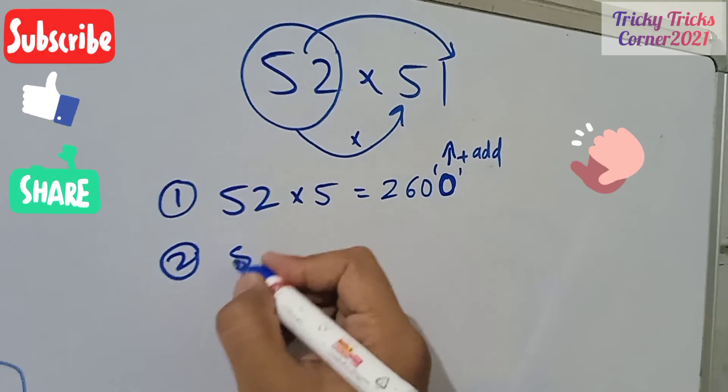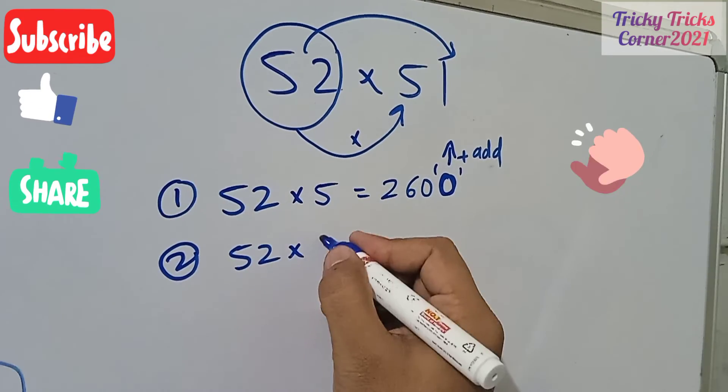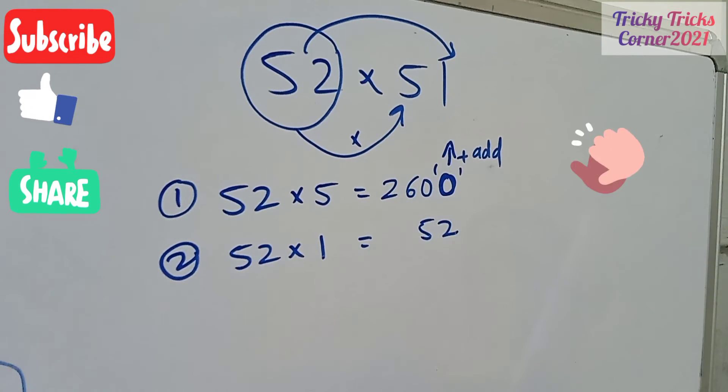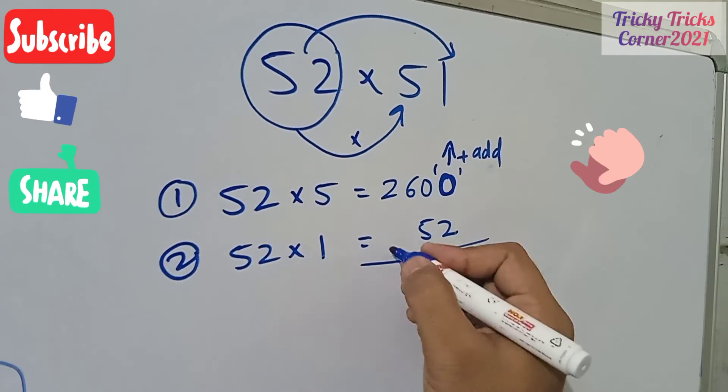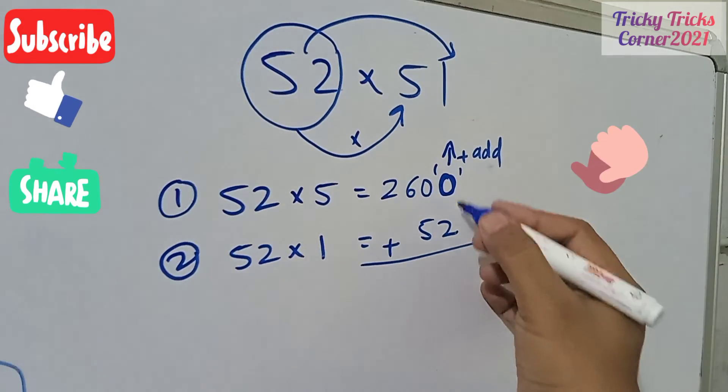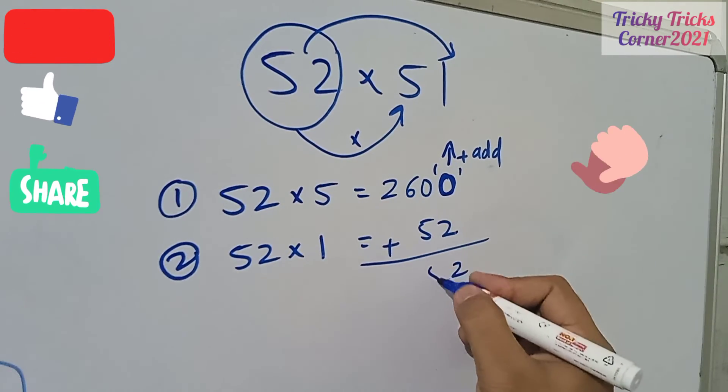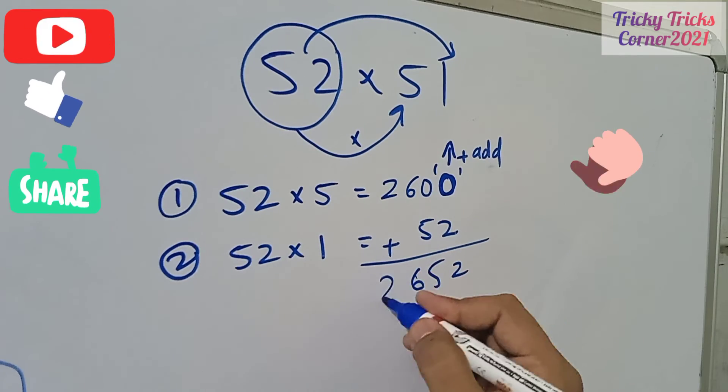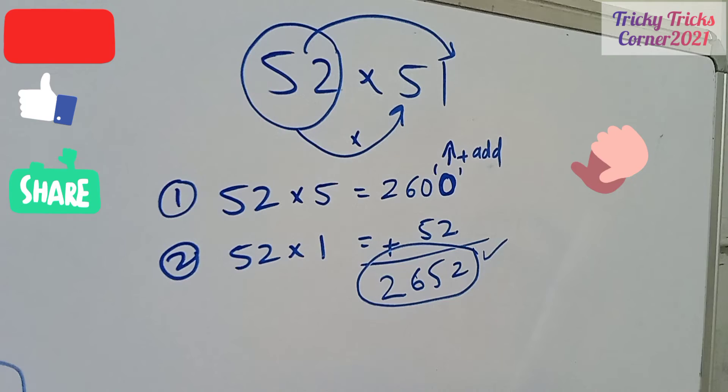Next, this is 52. 52 multiplied by 1, this comes around is 52. Right, now have the addition of these two numbers. Just add these two numbers: 2, 5, 6, 2. This is my required answer. It is very simple and it is very easy to execute.